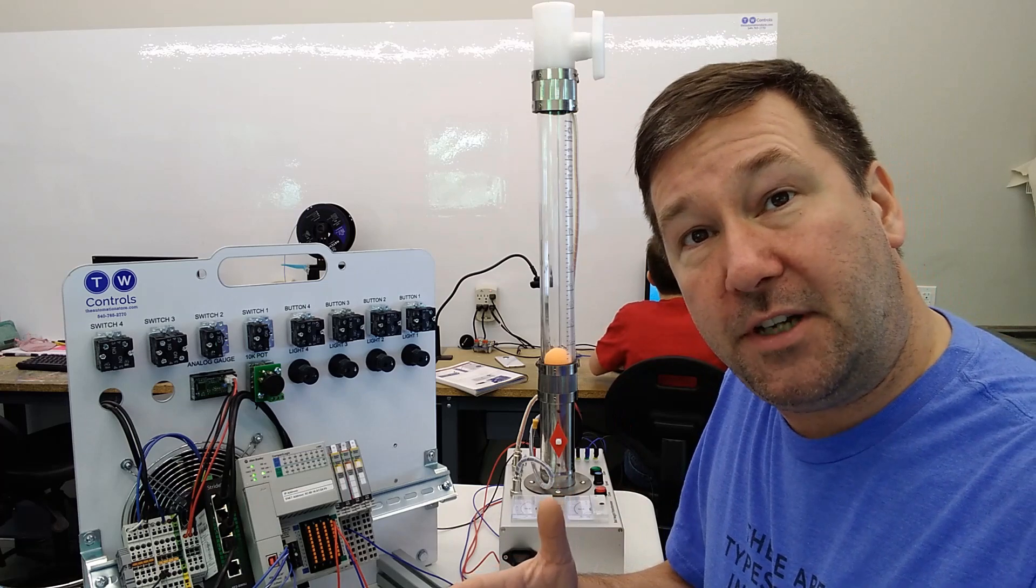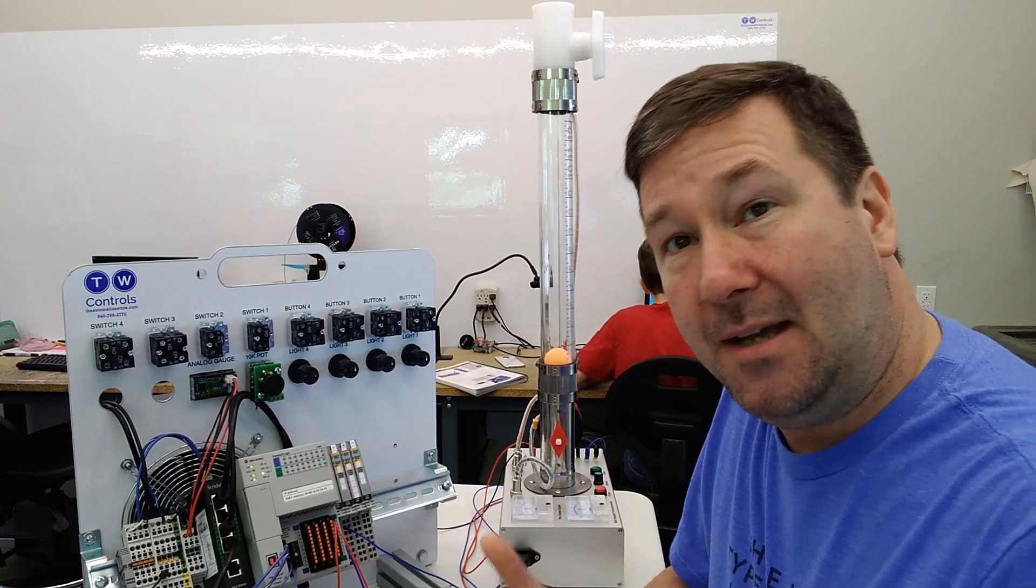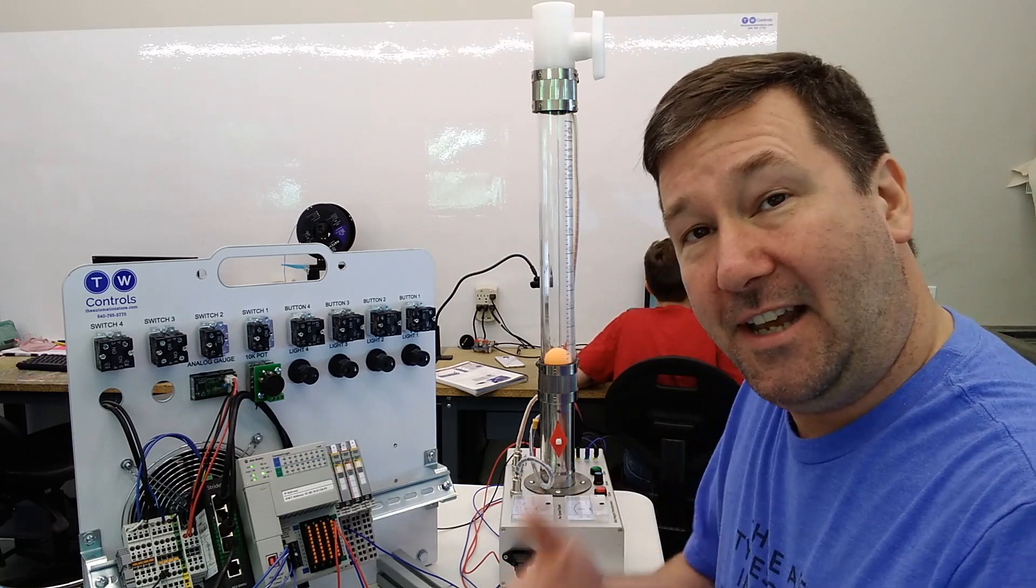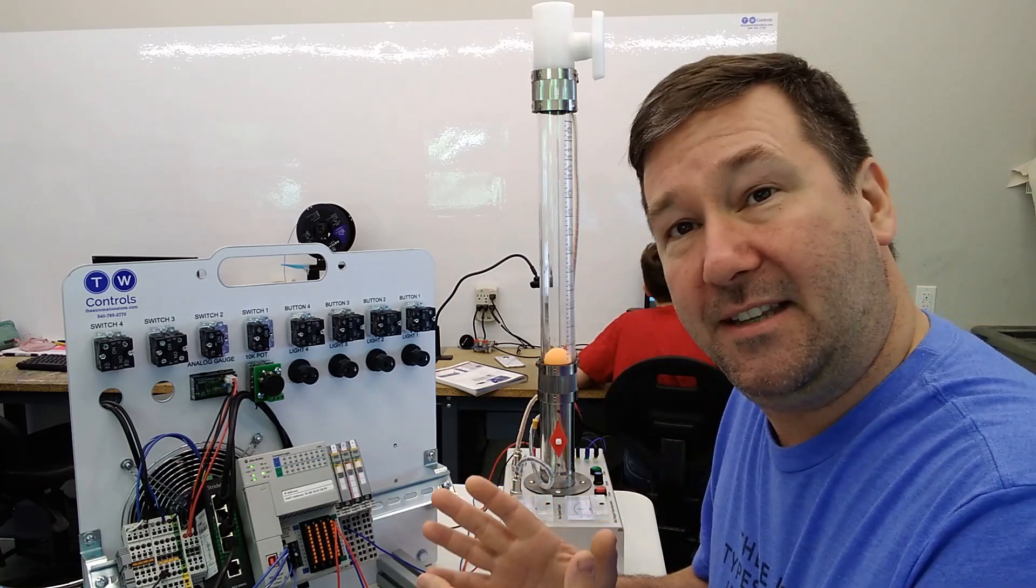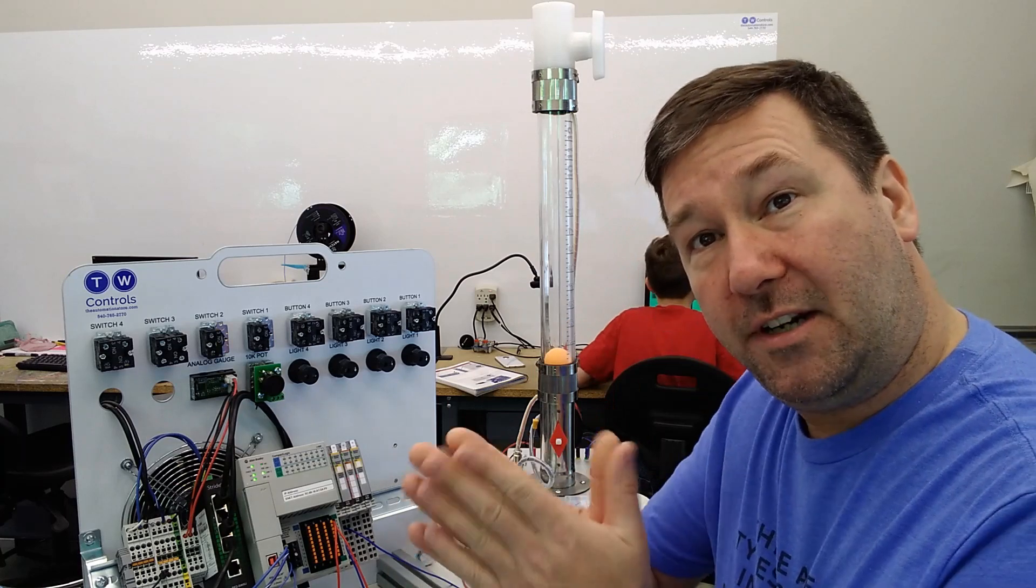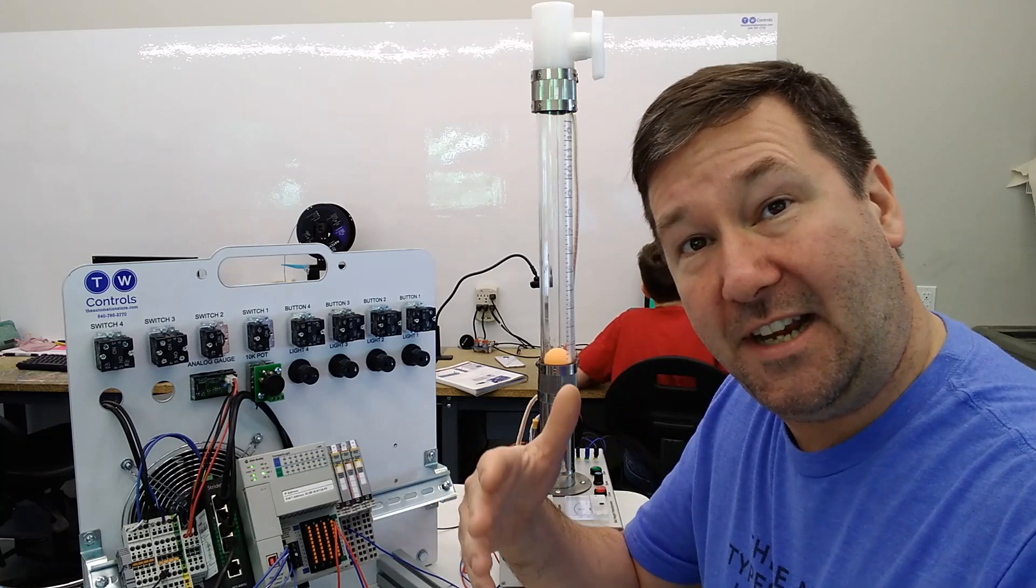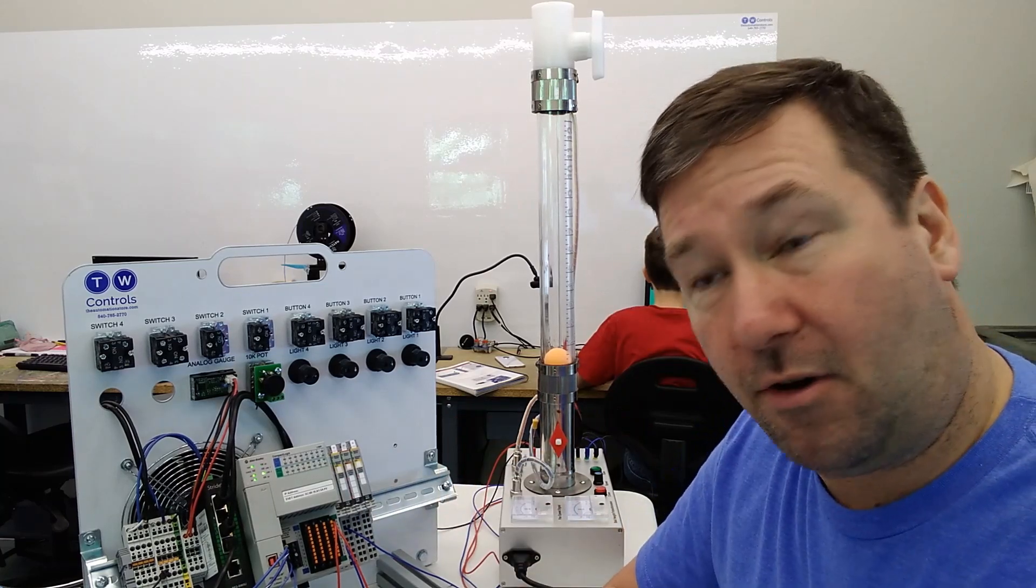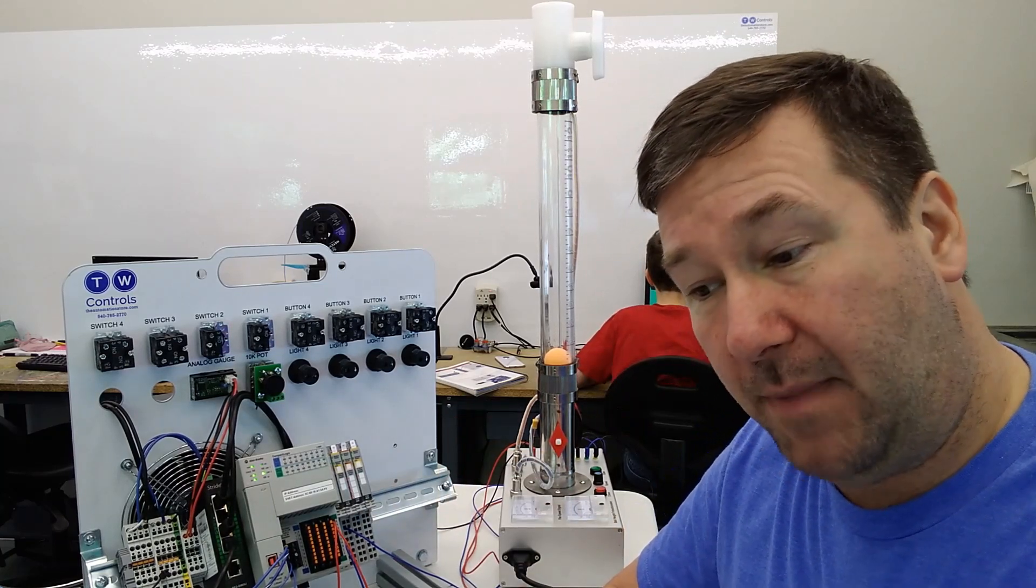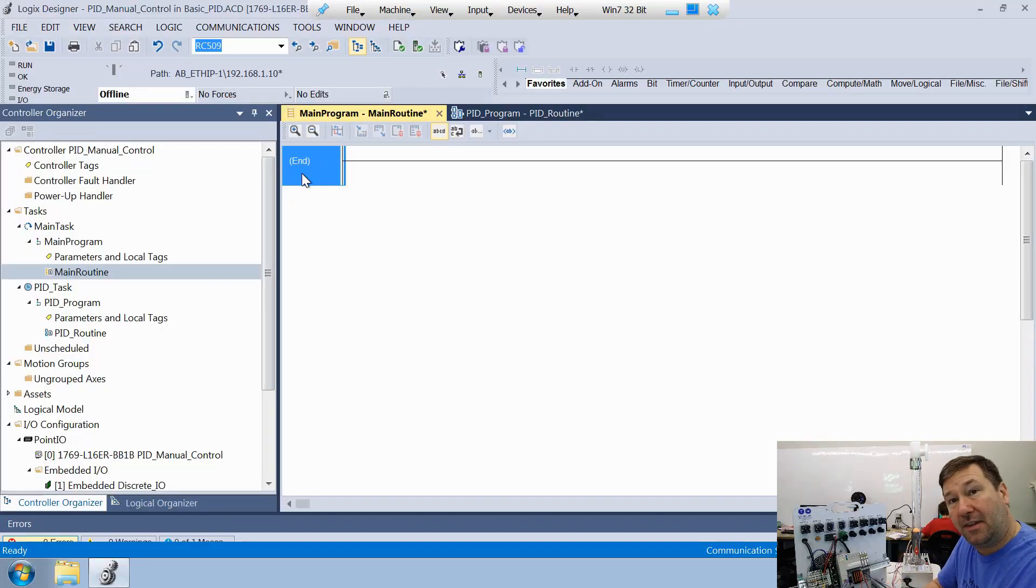So the goal of this video is really just to get a working PID instruction, because I know a lot of you are just like, hey, I just want to throw the PID in there and I think I can take it from there. And that's great. And after that, we're going to take some time and really start chopping this PID up and understanding it. So first thing, let's go to our main task, main program, main routine, and let's delete that rung out that we were using for that on-off control in our last video.